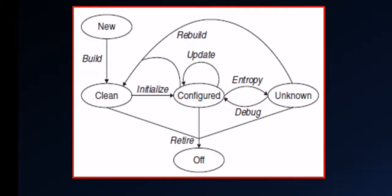The machine goes through different processes as it moves between states. The states — new, clean, configured, unknown, and off — have processes that happen between them: build, initialize, update, entropy, debug, rebuild, and retire. Let's discuss them one by one.